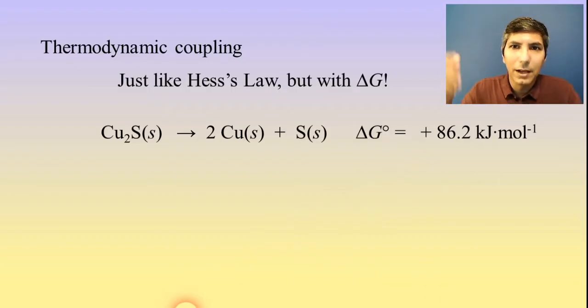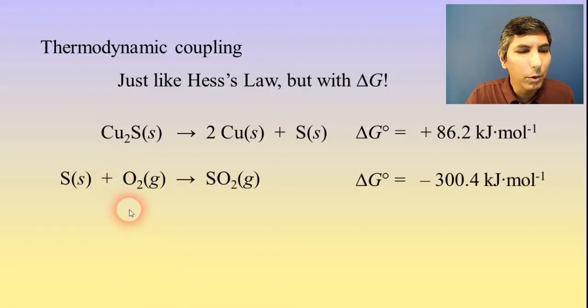So what do we do? Well, we don't just throw our hands up and give up. There is another reaction that we can couple that with that will actually make this process possible. So what if we have this? If we take a look at sulfur plus oxygen gas, it provides us with sulfur dioxide gas, and that reaction in itself has a delta G that is very negative. So that is a thermodynamically favored process.